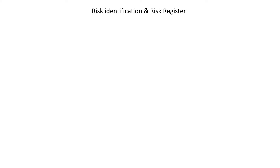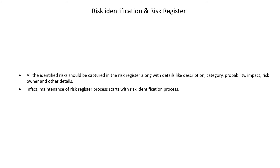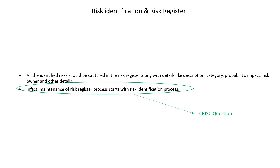Regarding risk identification and risk register: all identified risks should be captured in a centralized risk register along with relevant details like description, category, probability, impact, and other relevant details. One exam question: the maintenance of the risk register process starts with the risk identification process. Risk identification is the initial step of risk management, and the risk register should be maintained from that initial step itself.